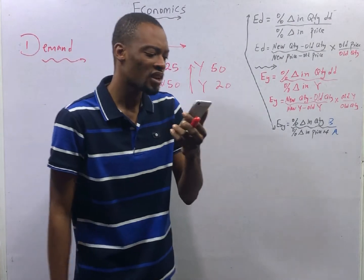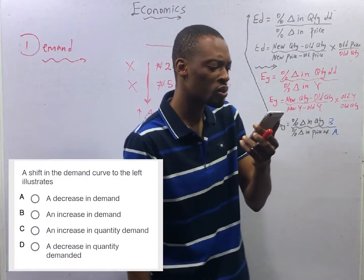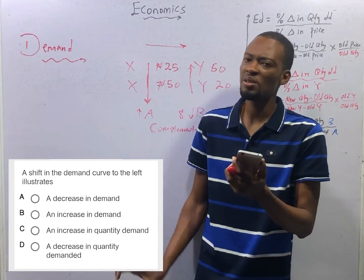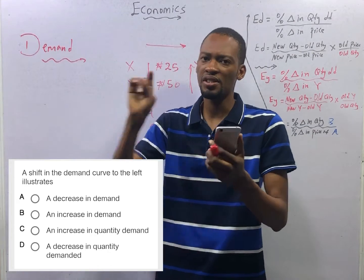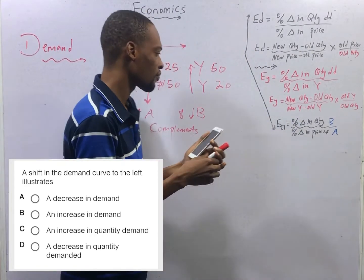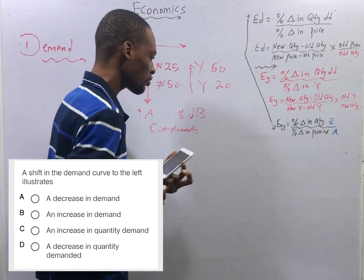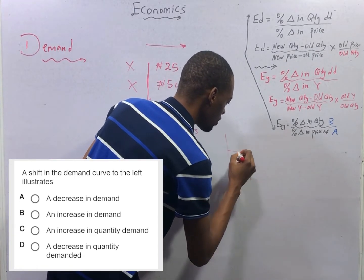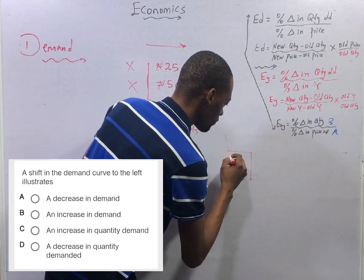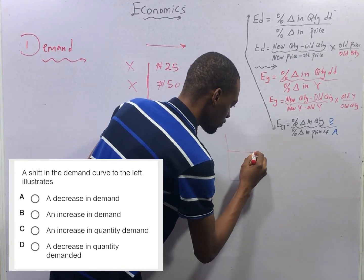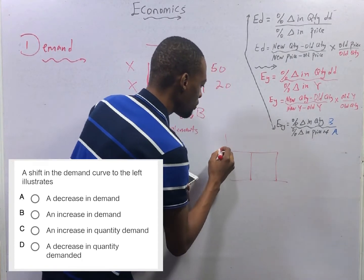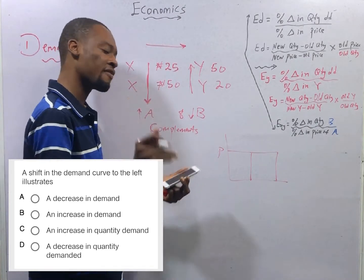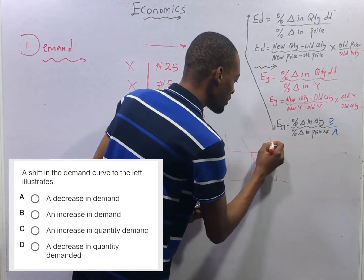And here it is, a shift in the demand curve to the left illustrates dash. A shift. This is not shift in quantity demanded. This is shift in demand. For shift in demand, price doesn't affect. It is other factors.